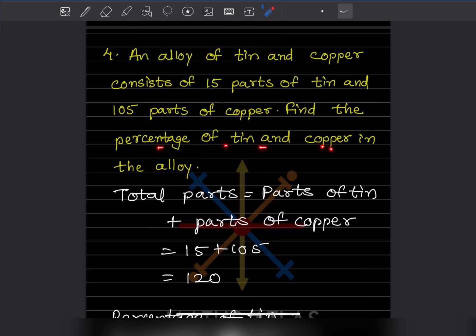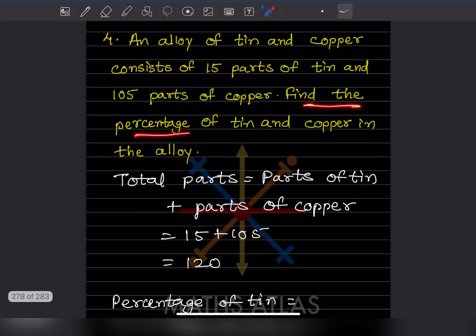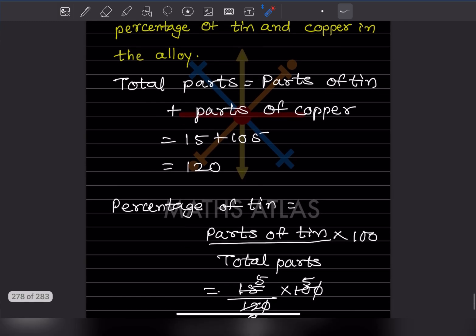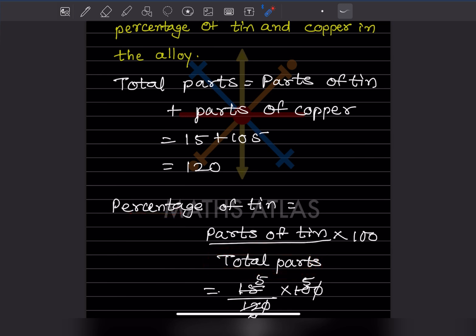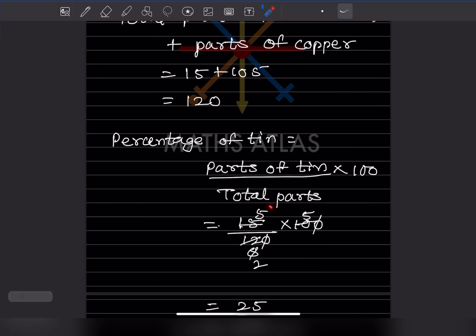An alloy contains 15 parts tin and 105 parts copper. Find the percentage of tin and copper. Total parts = 15 + 105 = 120. Percentage of tin = (parts of tin ÷ total parts) × 100 = (15 ÷ 120) × 100.